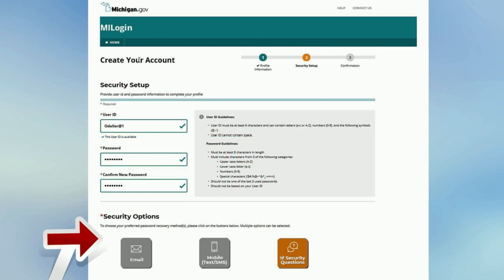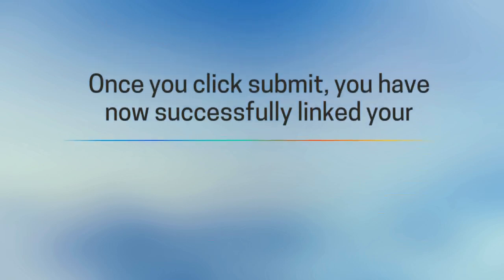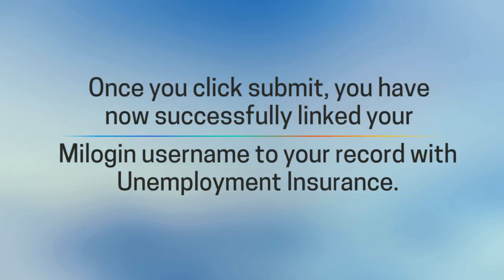After you create your account, you will enter your Social Security number and date of birth to begin linking the unemployment insurance account to myLogin. Once you click 'Submit,' you have now successfully linked your myLogin username to your record with unemployment insurance.